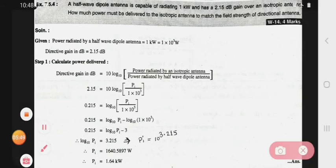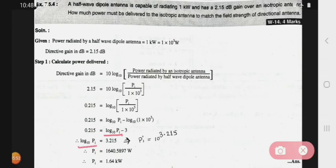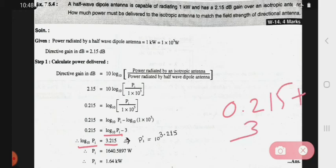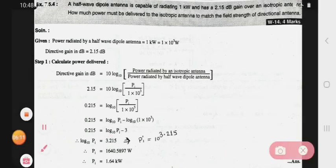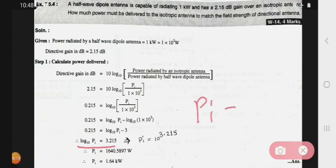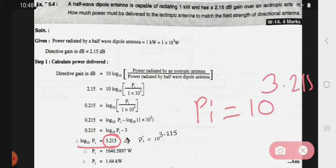After that, take log of Pi to one side. So log Pi equals 0.215 plus 3, which gives 3.215. To find the value of Pi, Pi equals 10 raise to 3.215.